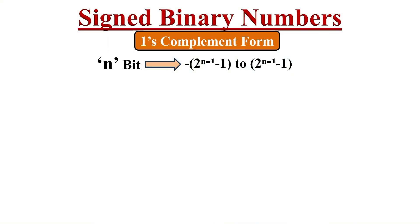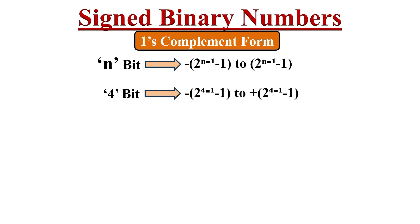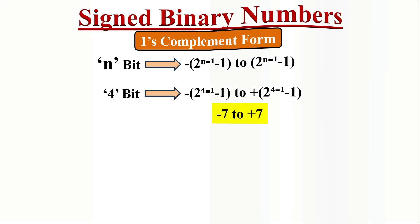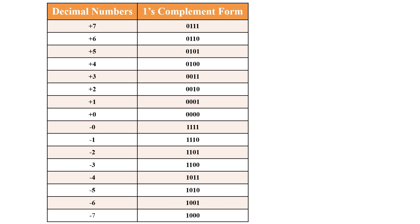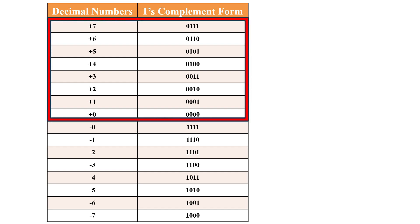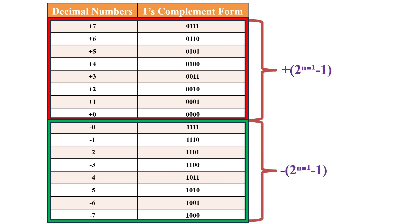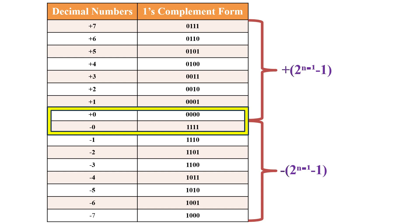For n bits, the range of numbers representable in one's complement form is minus 2 to the power of n minus 1 minus 1 to plus 2 to the power of n minus 1 minus 1. Using 4 bits, we can represent from minus 7 to plus 7. The table shows 8 positive and 8 negative numbers. Similar to sign magnitude form, there are two different representations of 0, which is the main disadvantage of one's complement form as it creates great manipulation difficulty.